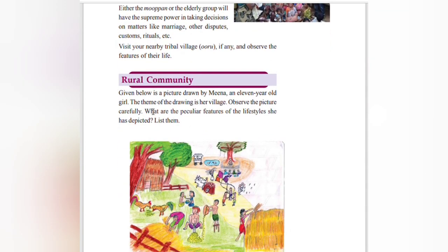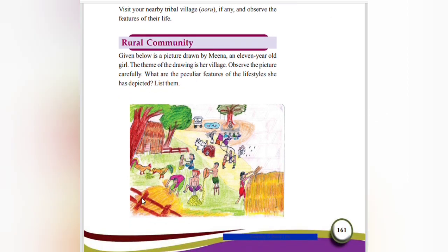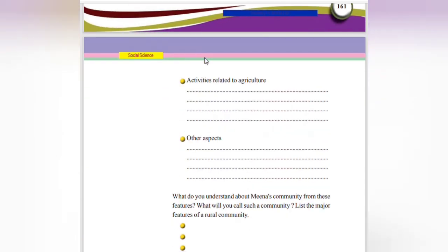Rural community. Given below is a picture drawn by Meena, an 11-year-old girl. It shows a grazing field, children playing kite, a hen, a bullock cart — everything depicting the inside part of a village. Observe the picture carefully. Identify activities related to agriculture and other aspects such as plowing and harvesting.